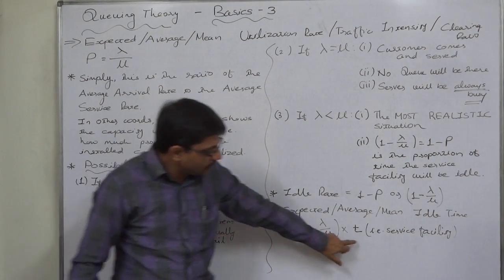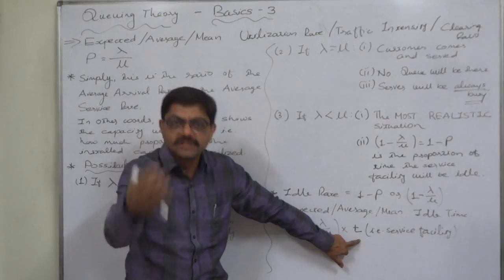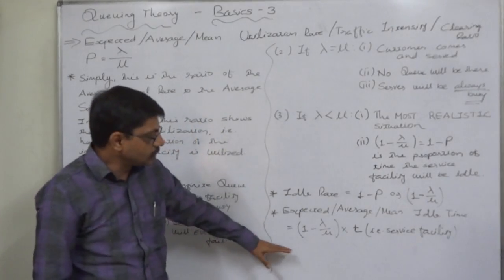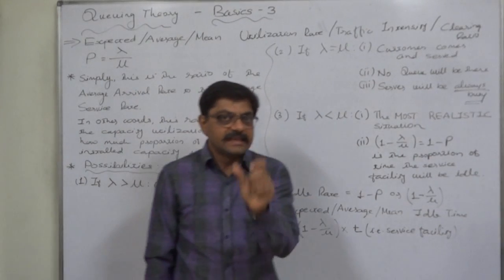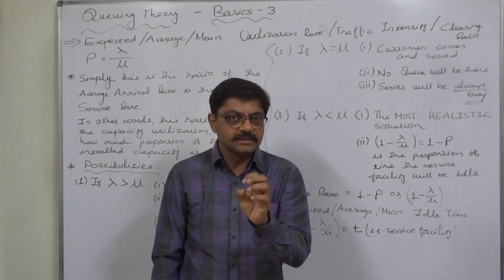On the basis of this we already calculated a moment before the idle time. Idle ratio into T, in our example it was 60 minutes or 1 hour. That shows the mean or average or expected idle time that was 12 minutes in our small examples we discussed earlier.